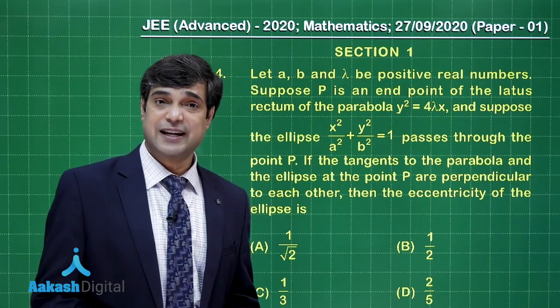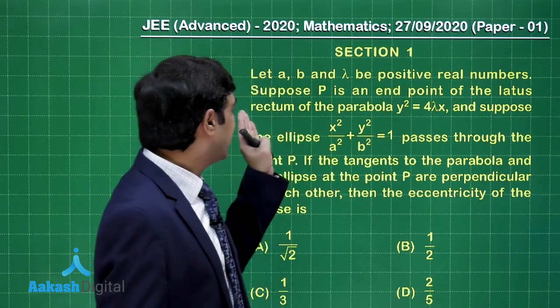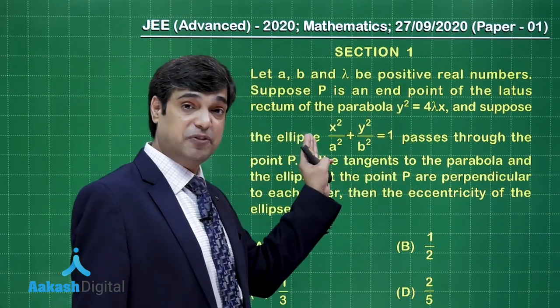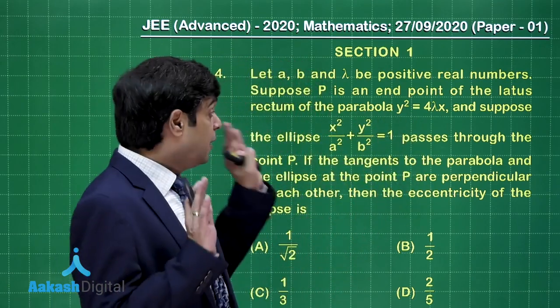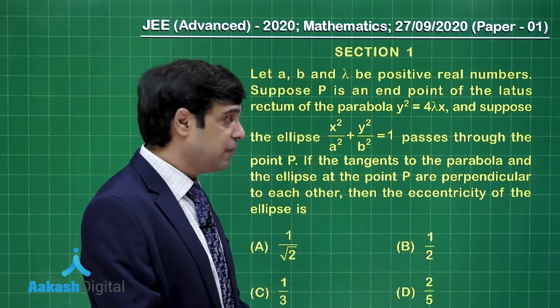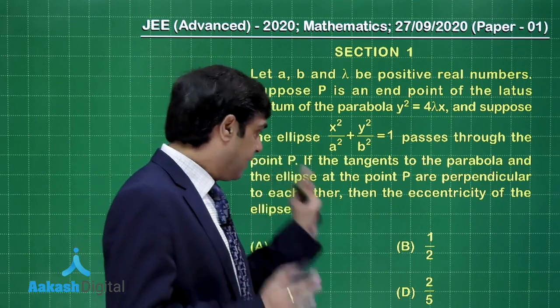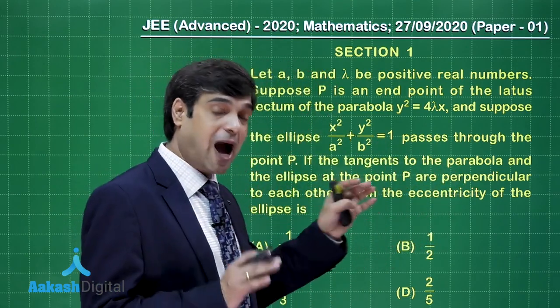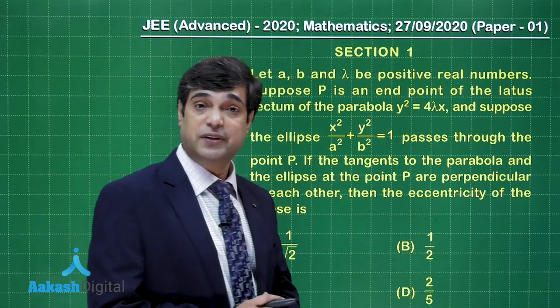So moving forward, let's take up question number 4. Let a, b and lambda be positive real numbers and P is an endpoint of lattice rectum of the parabola y square equals 4 lambda x. Now suppose the ellipse x square upon a square plus y square upon b square equals 1 passes through the point P. If the tangents to the parabola and ellipse at this point P are perpendicular to each other, then we have to find eccentricity of the ellipse.